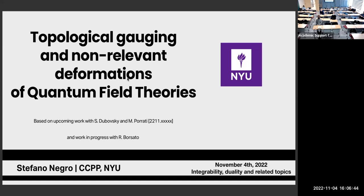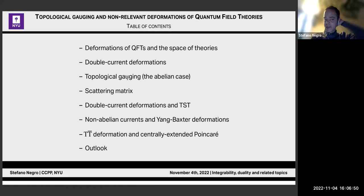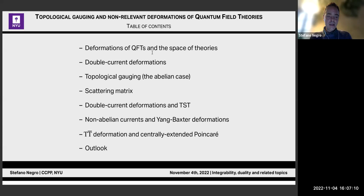This is a table of contents. I will start by talking about deformations in quantum field theories, in particular from the perspective of the space of theories. This should serve as motivation — giving some reason for why we are interested in studying these deformations, what is interesting about them. Then I will present this family of double current deformations, and then I will present how to obtain this deformation from a path integral point of view via topological gauging.